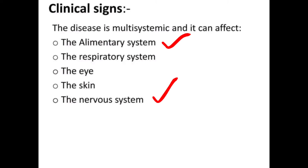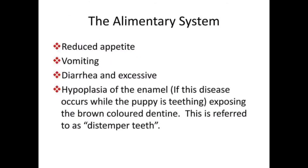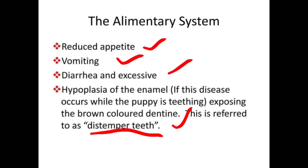Alimentary system clinical signs include reduced appetite, vomiting, diarrhea, and excessive dehydration. Hypoplasia of the teeth may result if the disease occurs while the puppy is teething, exposing brown-colored dentine — this condition is referred to as 'distemper teeth.'